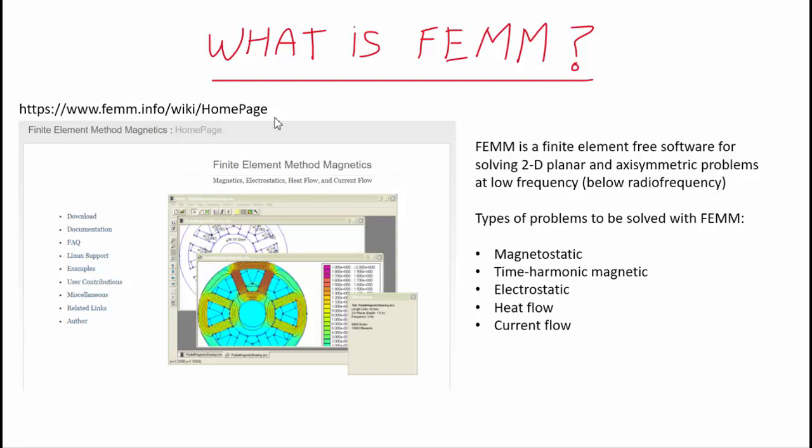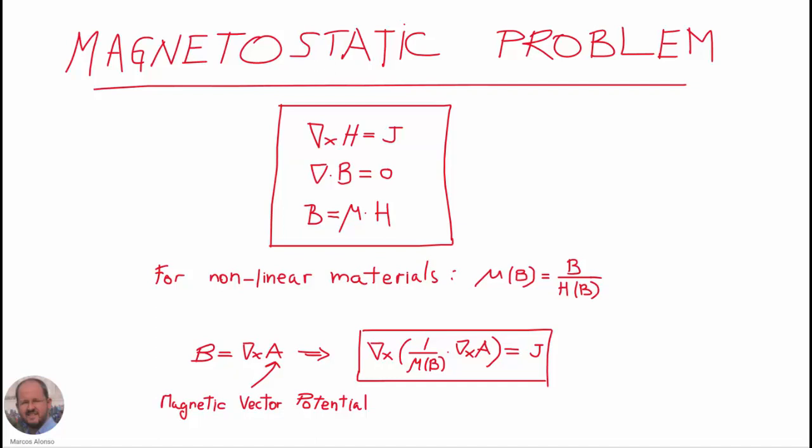A magnetostatic problem is one in which the fields do not depend on time. We have equations from Maxwell's equations: the curl of the magnetic field intensity H equals the current density J, and the divergence of the magnetic flux density B equals zero. Finally, the magnetic flux density B is proportional to the magnetic field intensity H.